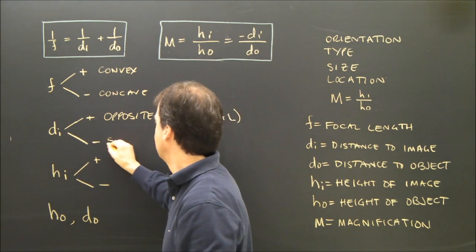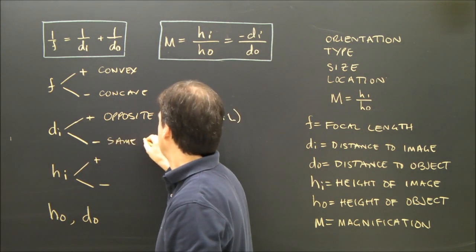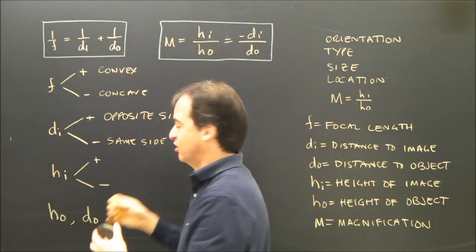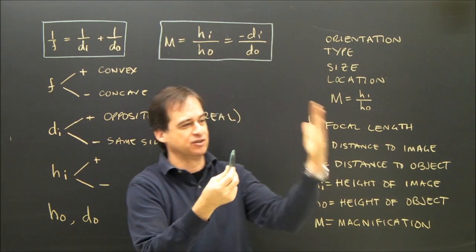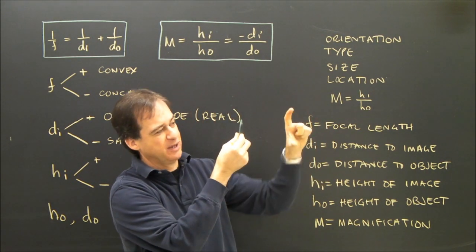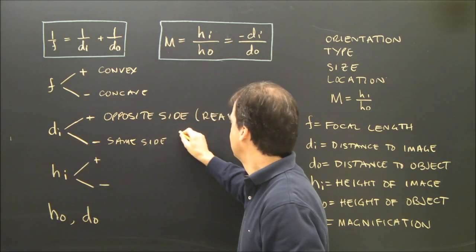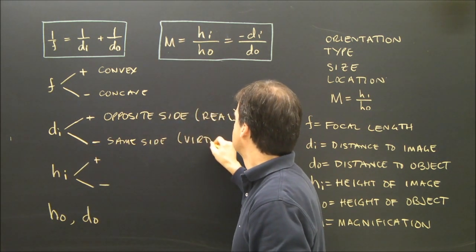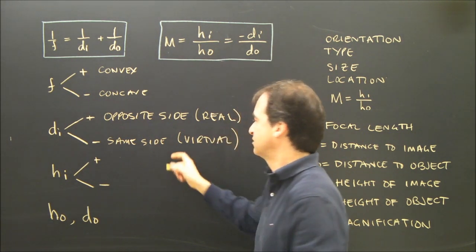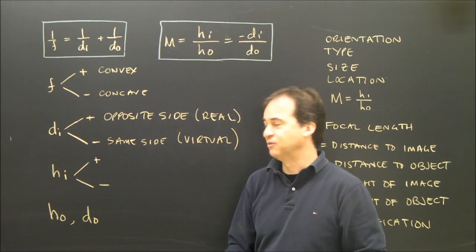So the sign would be negative because the image is on the same side as the object. Here's my object, and I look through, there's my image. It looks bigger and virtual. So if it's on the same side, DI comes out negative, it means something about the characteristics, the object's image must be virtual.